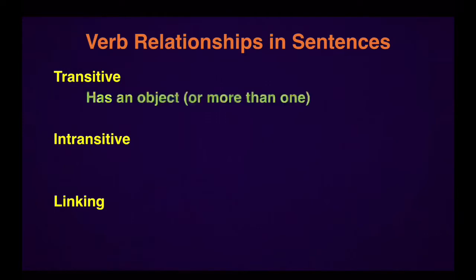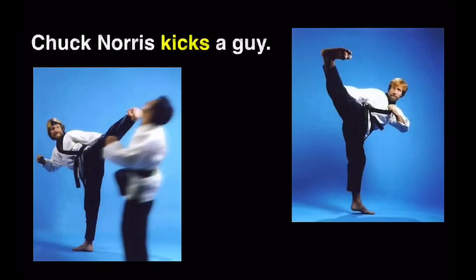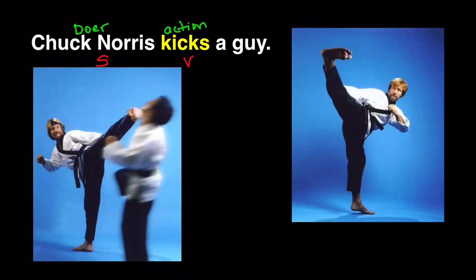A transitive verb has an object, or more than one, while an intransitive verb has no object. For example, if you look at the picture on the left, Chuck Norris kicks a guy. The verb is kicks, and the subject of kicks is Chuck Norris. So Chuck Norris is the doer of the action, and the guy is the one receiving the kick — he's the receiver of the action.